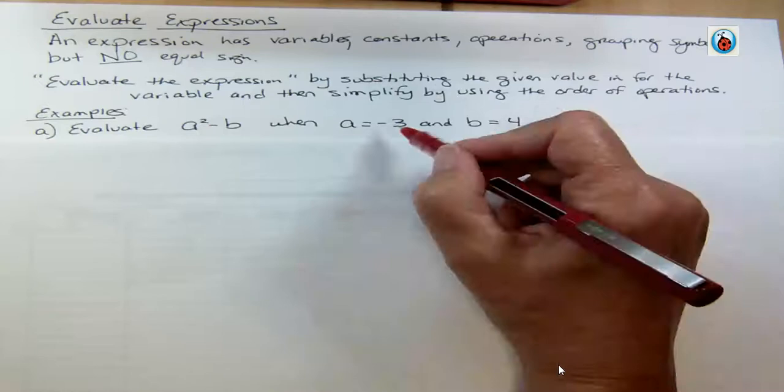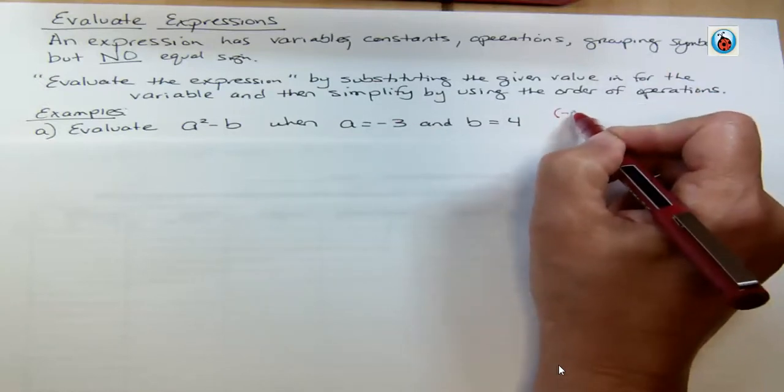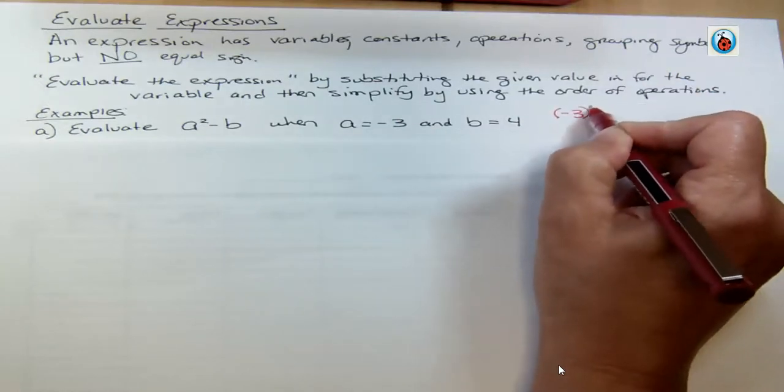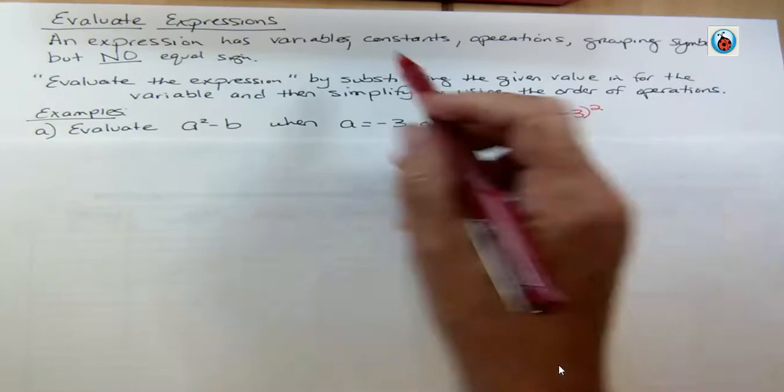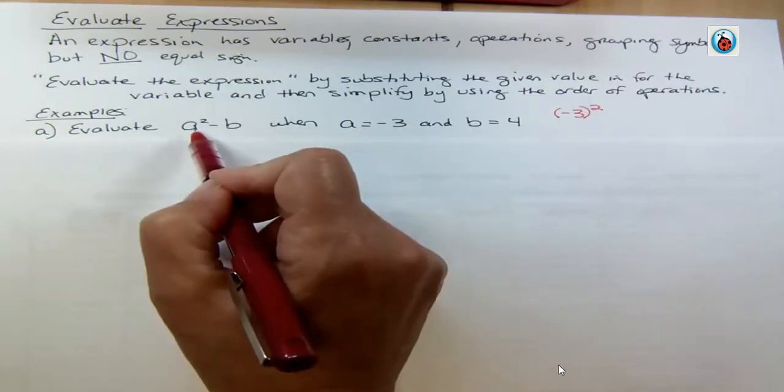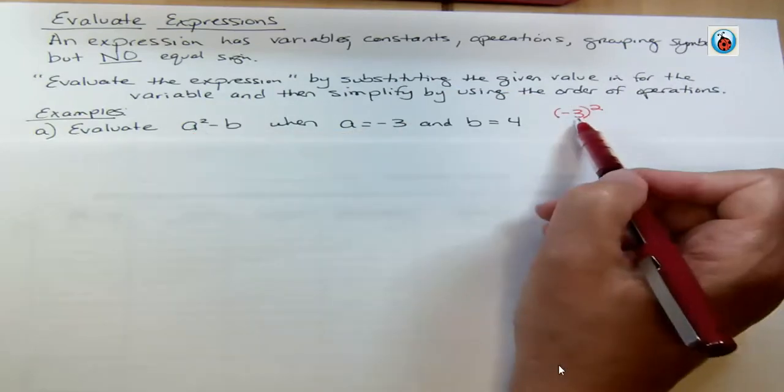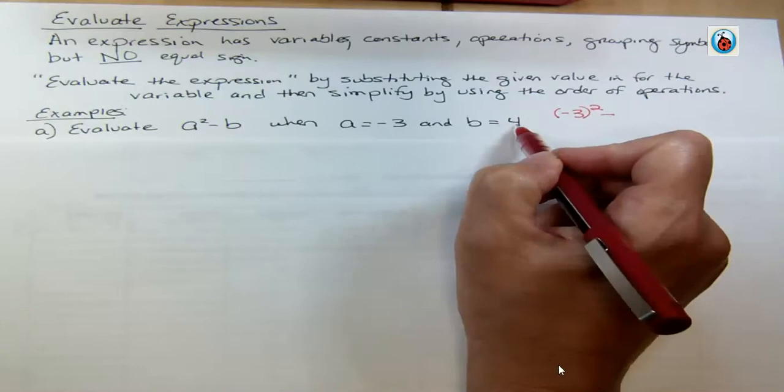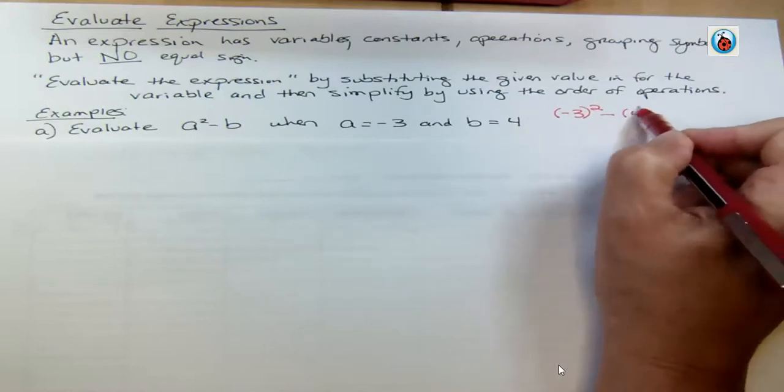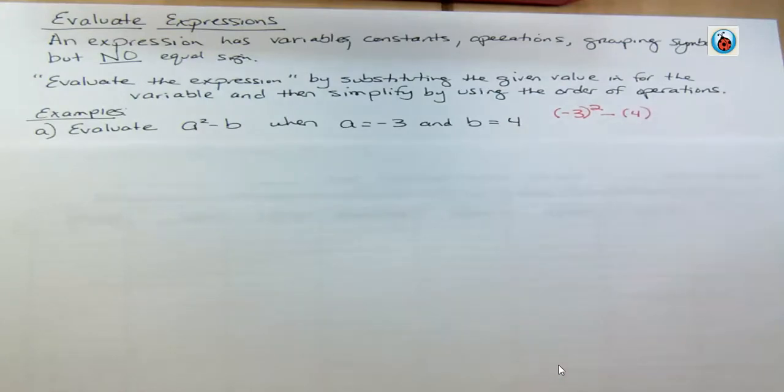Instead of a, we want a to be negative 3. So we're gonna say negative 3 to the second power. We just substituted this a for negative 3. Minus and then b. b is 4. See how I put parentheses around both of those? Sometimes you need it, but it won't ever hurt you to do it.